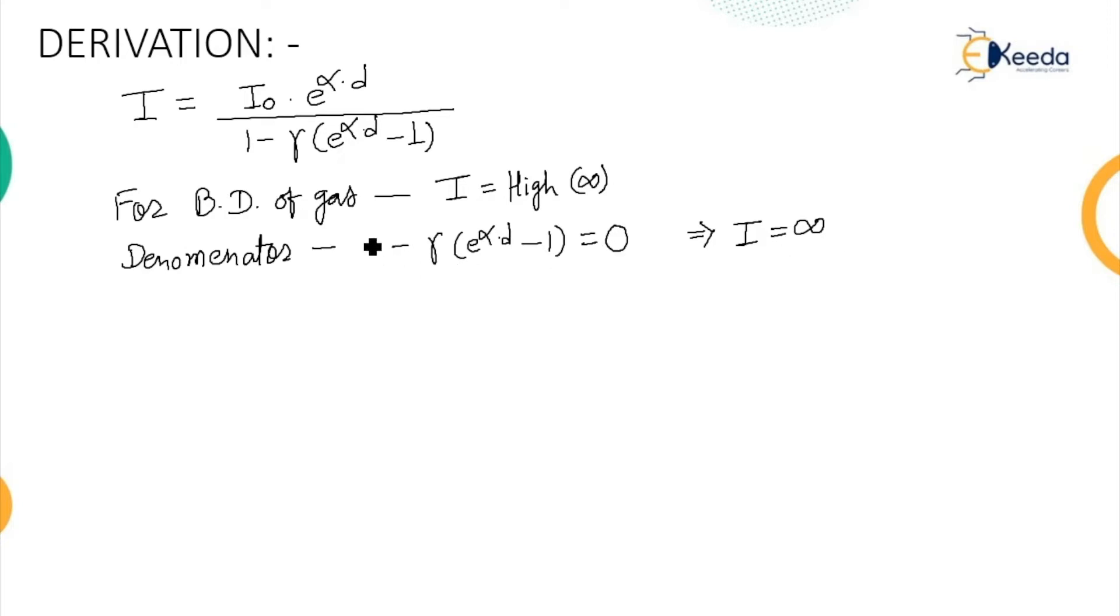Now, considering this equation and forming the criteria, we get the next step as is equal to 1, and implies we can write it as gamma into e to the power alpha d is equal to 1. e to the power alpha d is much greater than 1. So this is what the criteria for the occurrence of breakdown. When we have gamma e to the power alpha d is equal to 1, the breakdown occurs between the insulating gas.